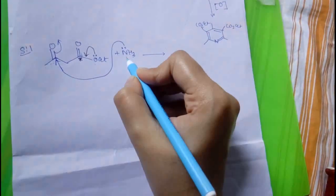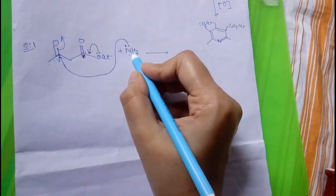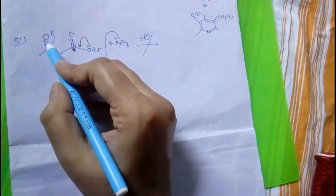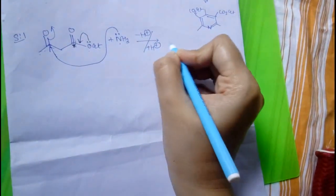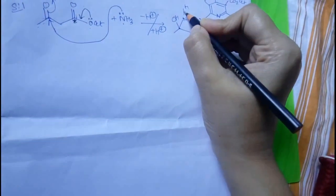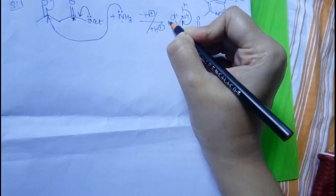Now, NH2 positive forms and it will lose one H plus. This H plus will be captured by O minus, and ultimately this product will form. Now, imine will form by releasing one H2O molecule.